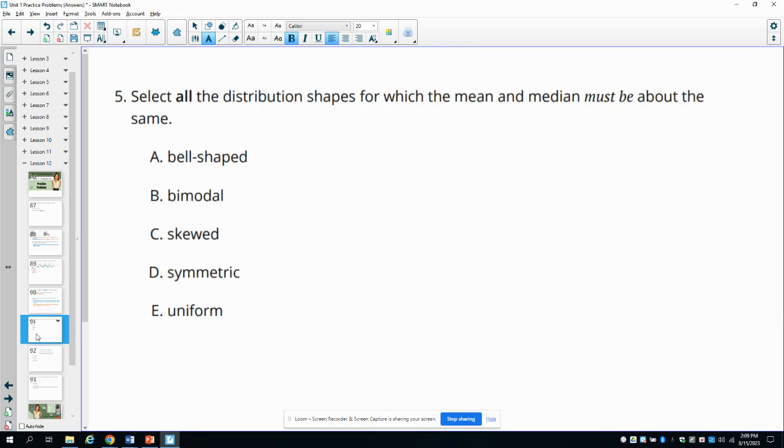Number five, select all distribution shapes for which the mean and the median must be about the same. So must be about the same is in symmetric graphs. So symmetric and bell-shaped. And then uniform means everything's the same. So the mean would be the same, the median would be the same. The dots are there the same number of times. So bimodal does not guarantee that. It could happen, but it doesn't have to. And in skewed data, they could not be the same.